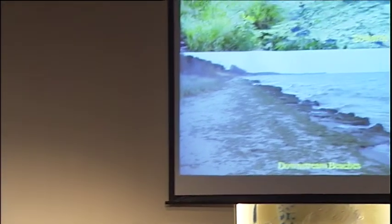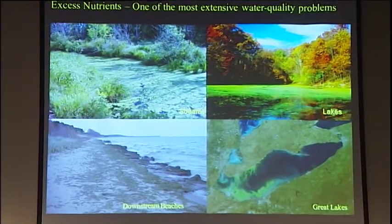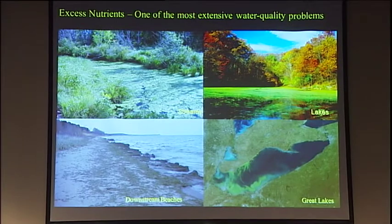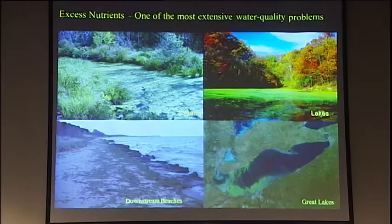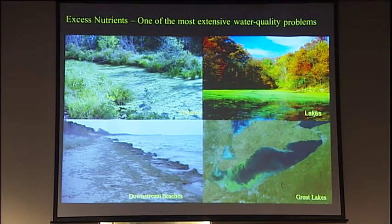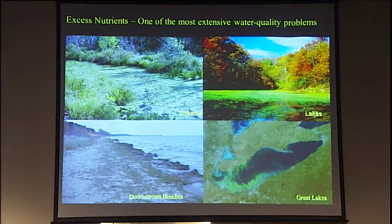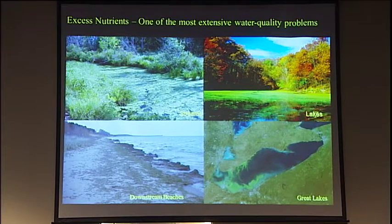Now we've heard from various other speakers today — one of the real problems in water quality deals with excess nutrients coming into the system, and we see that in small streams, small lakes, and a lot of lakes that I work with, including really big lakes like the Great Lakes. You see these problems with algal blooms, and that's really caused by an excess input of nutrients.